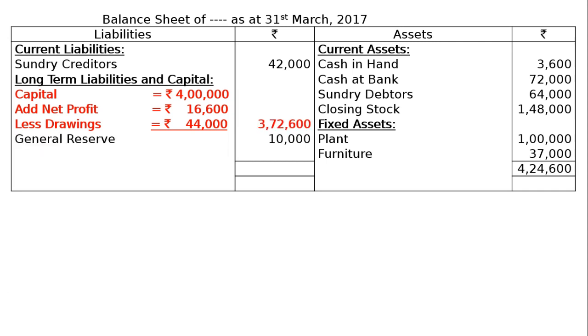Totaling the liability side gives rupees 4,24,600, which tallies with the asset side total. This is the final answer.